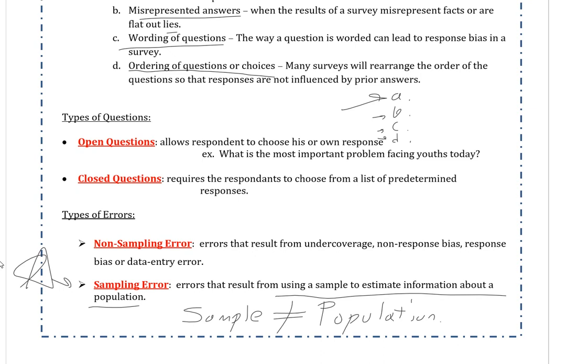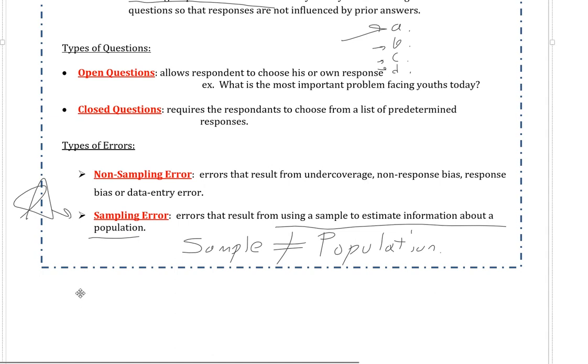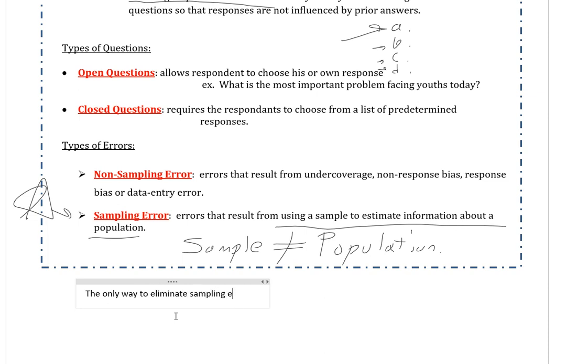So sampling error results from simply doing a sample. Any sample has sampling error. The only way, underline the only way, to get rid of sampling error is to do a census. I'll even type that here to demonstrate that I feel this is very important. The only way to eliminate sampling error from a study is by conducting a census, i.e. analyzing the entire population.